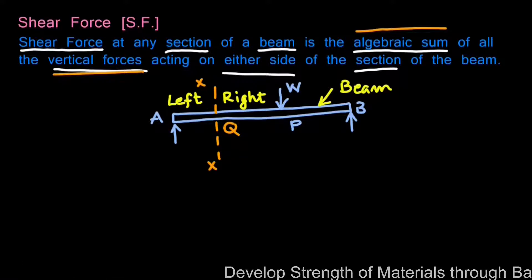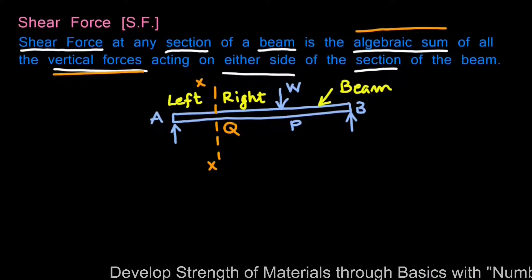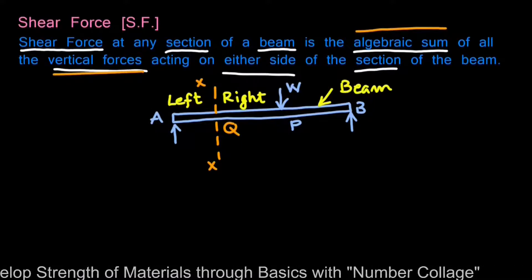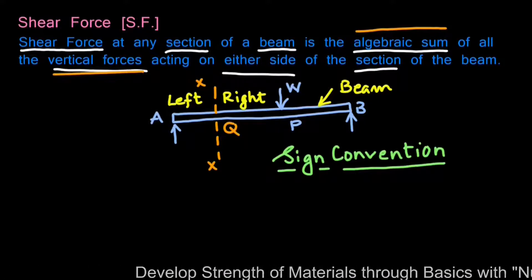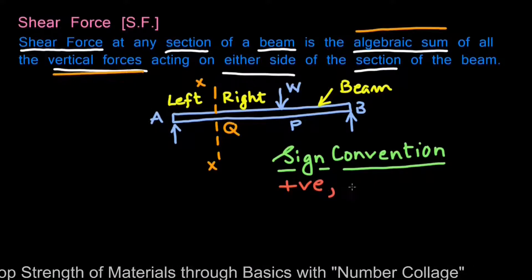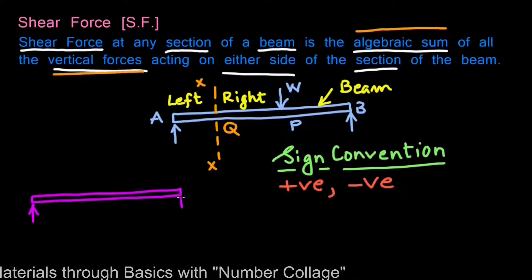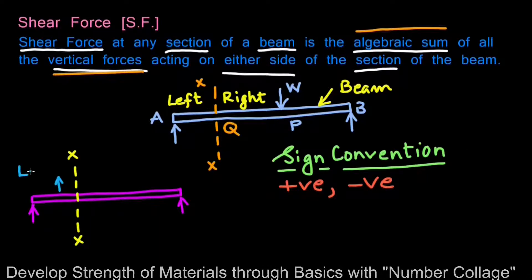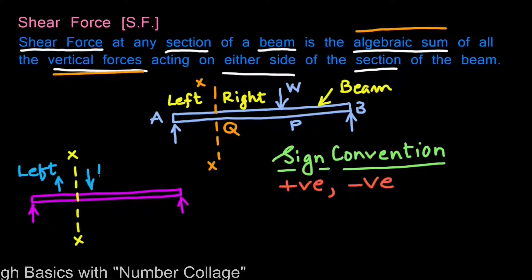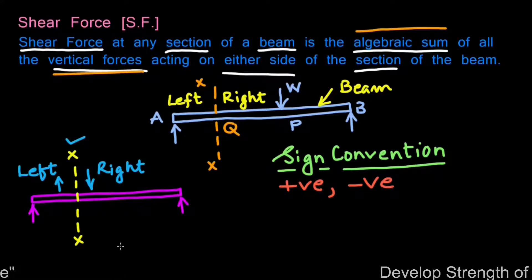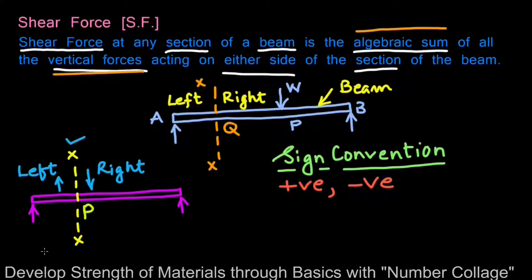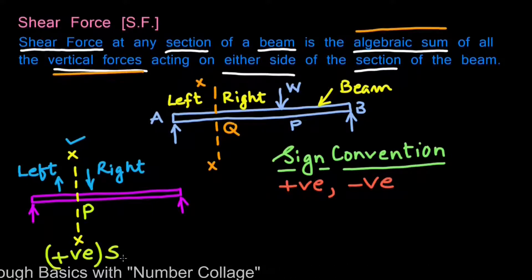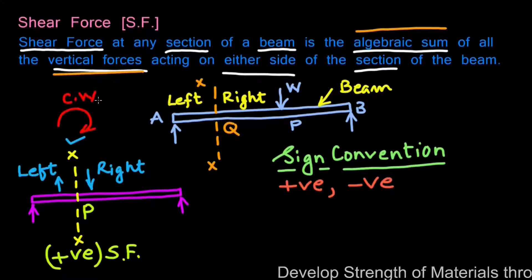Since shear force is the algebraic sum of forces on either side of a given section XX, we have to consider the sign convention. If the unbalanced vertical force is upward to the left of section XX and downward to the right of section XX, then the shear force at that point is considered to be positive. The unbalanced vertical forces about section XX are acting in a clockwise direction, which is another way of remembering positive shear force.